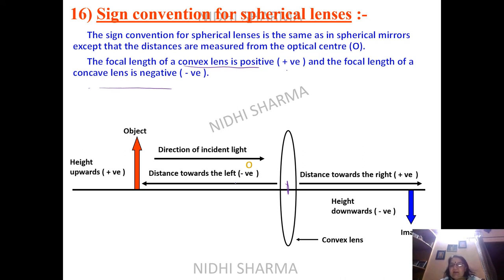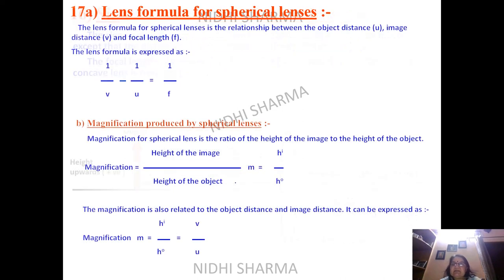The only difference from mirror sign conventions is that we use the optical center instead of the pole. Concave lens and concave mirror both have negative focal lengths; convex lens and convex mirror always have positive focal lengths.